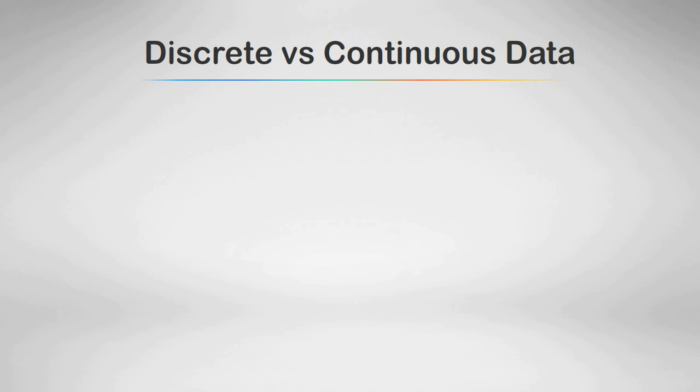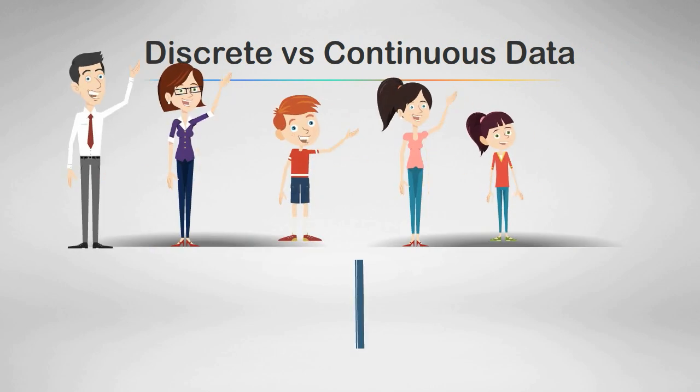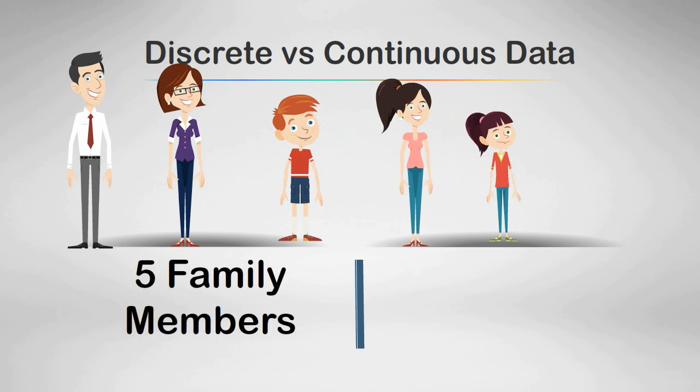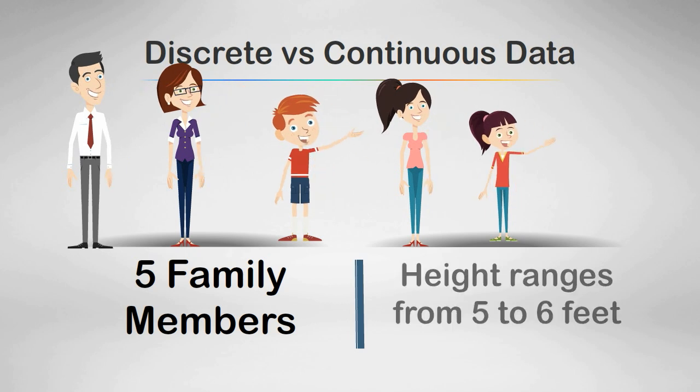Let's look at two examples and see the difference between these two types of data. Let's talk about your family. With your family, the family members would be discrete because you have 5 family members. The continuous data is that they range in height between 5 feet and 6 feet.